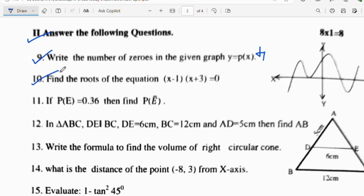Question number 10: Find the roots of the equation (x minus 1)(x plus 3) is equal to 0. Very easy. x is equal to 1, x is equal to minus 3. Question number 11: If p of e is equal to 0.36, then find p of e bar. Very easy, 1 minus 0.36 is 0.64, the right answer.